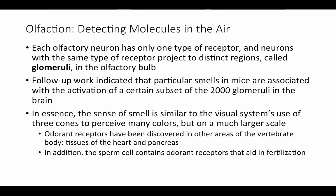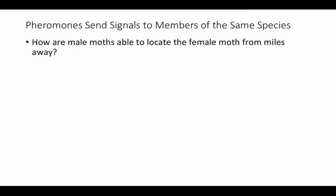With 2,000 different inputs on a much larger scale, we can discern millions of distinct odors. Odorant receptors have been discovered in other areas of the vertebrate body, such as tissues of the heart and pancreas — detecting chemicals not perceived as taste or smell, but allowing the body to keep track of chemical distribution to maintain homeostasis. It's also been recently discovered that sperm cells contain odorant receptors that aid in fertilization, detecting chemicals in the female reproductive tract to help find the egg.